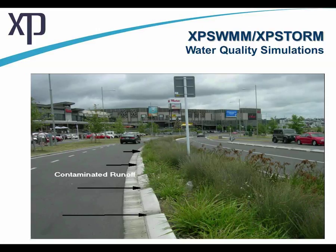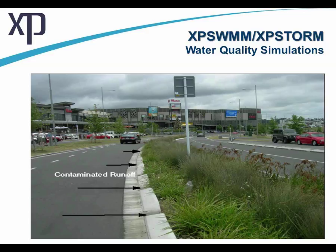Where does diffuse pollution come from? We can model this in the urban environment and in the rural environment with XP SWIM and XP STORM. The difference between XP SWIM and XP STORM is that XP SWIM also includes a sanitary or foul network modeling capability. We can simulate surface water in both and model the concentrations and loadings of pollutants flowing off a variety of surfaces — from the rural landscape and from the urbanized landscape. When you have long dry spells, oils, heavy metals, and rubbers build up and deposit off traffic on the highway.